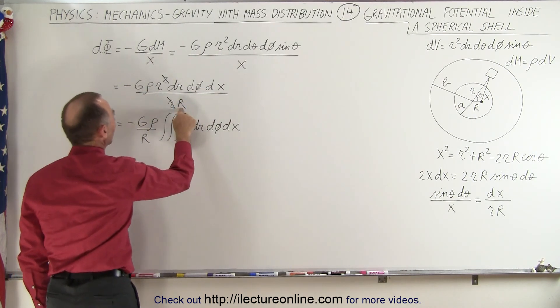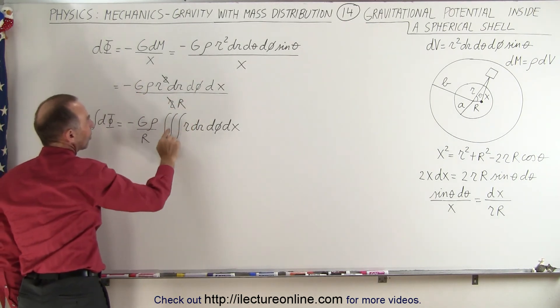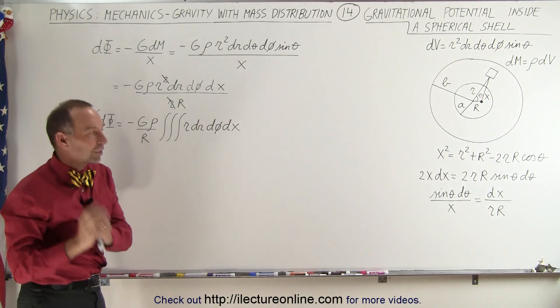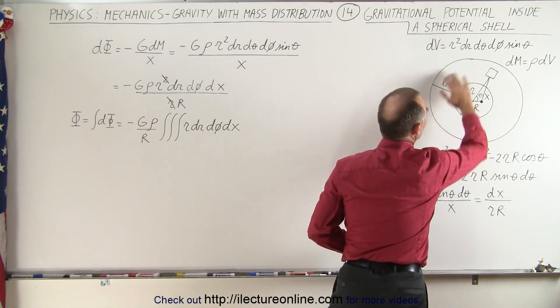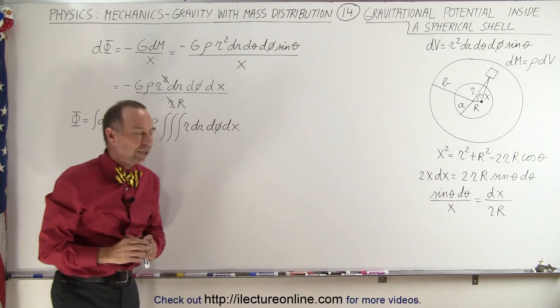If we then integrate that, we should be able to get the gravitational potential caused by all of the mass in the shell for a point inside that spherical shell.